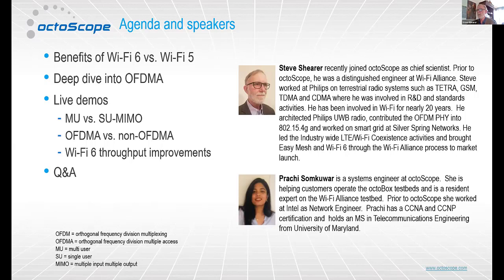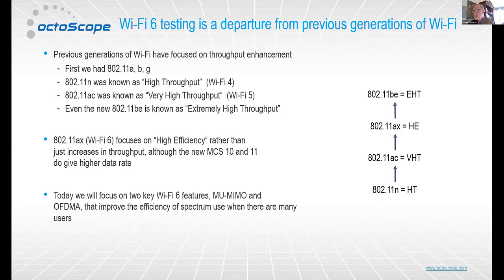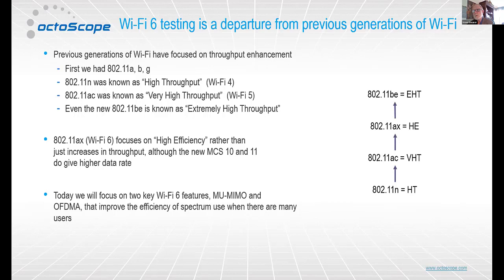Thank you Fanny, and thank you everyone for joining. As an introduction, Wi-Fi 6 testing is really a departure from previous generations of Wi-Fi. In the beginning we had 802.11b that evolved through A and G, later through 11n, known as high throughput or Wi-Fi 4. 11ac came in as very high throughput or Wi-Fi 5. All these previous generations have been focused on giving higher and higher throughput to individual users. 11ax is different in that it focuses on high efficiency for a network, not just increases in throughput.